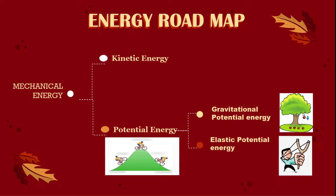What is the roadmap of energy? Mechanical energy is divided into two types: kinetic energy and potential energy. Kinetic energy is the energy possessed by an object due to its motion. Potential energy is the energy possessed by an object due to its position. This potential energy is further divided into two types: gravitational potential energy and elastic potential energy, which we are going to see in detail in the coming slides.